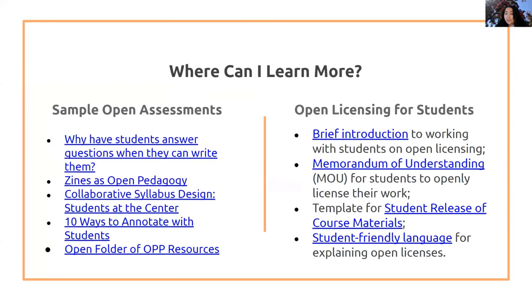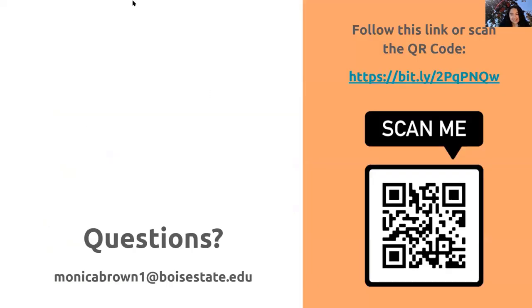We also see annotation as another tool — having students openly annotate their resources so they can add to the conversation happening in a text can be really powerful. On the right, I have cheat sheet resources for open licensing for students. I think it's so important to have student-friendly, accessible language when talking about copyright. These are resources shared at the national level, including slide decks, student release of course materials, and how to have that conversation so students know what they're getting into and can make really informed decisions about their copyrights. That's all I have today — the QR code is here if anyone wants to scan it.